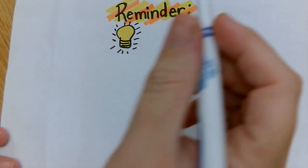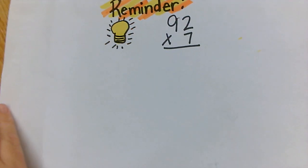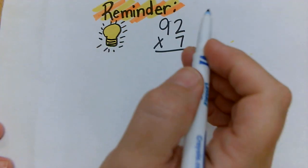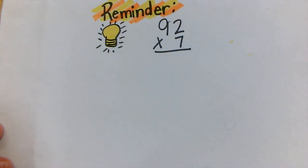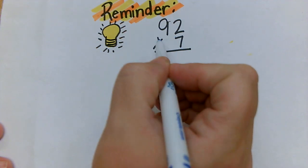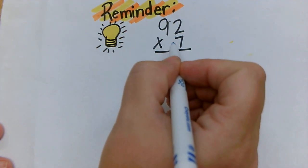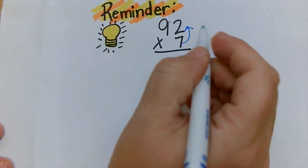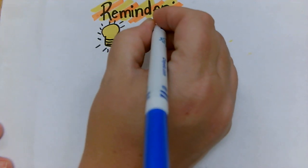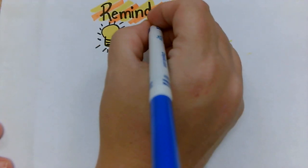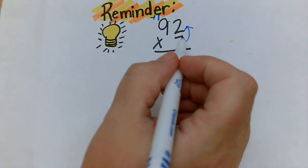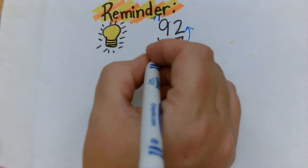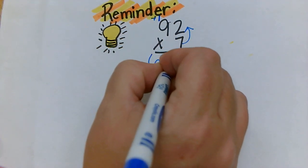This is our reminder about how to use the standard algorithm when multiplying. We previously multiplied two digits by one digit, so here we say seven times two is 14 — put the four, carry the one. Then seven times nine is 63, plus one is 64. So the answer is 644.